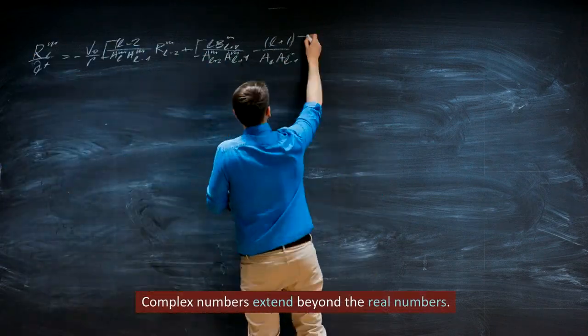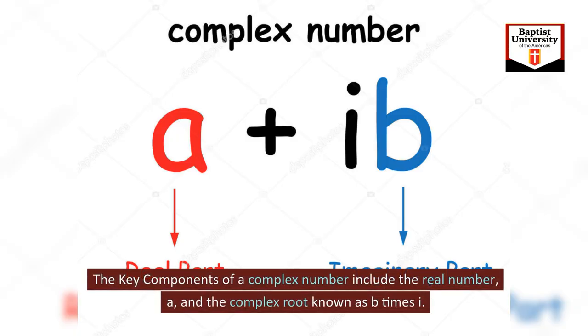Complex numbers extend beyond the real numbers. The key components of a complex number include the real number A and the complex root known as B times I.